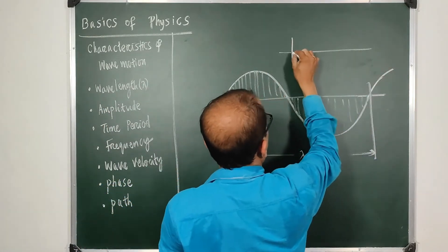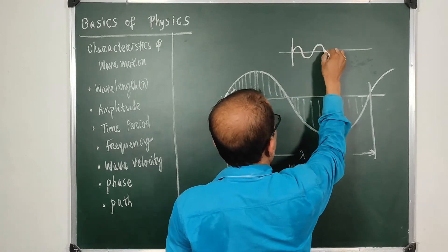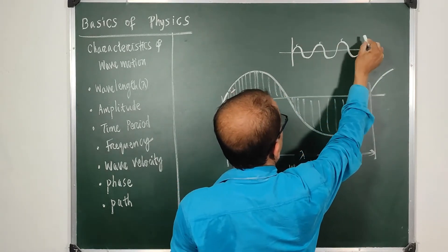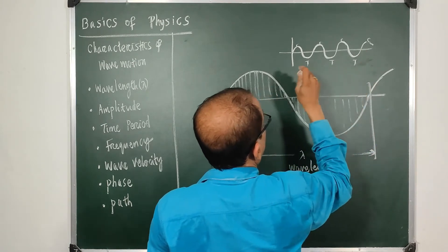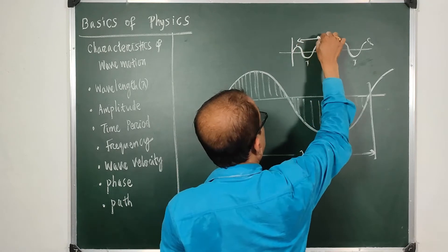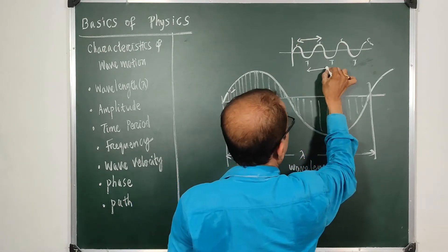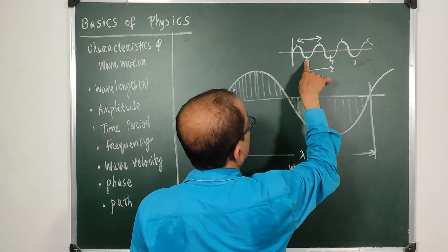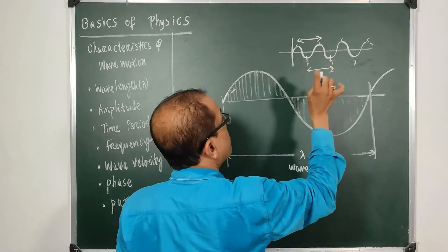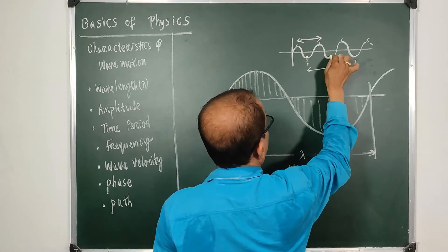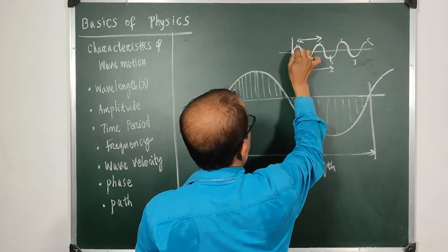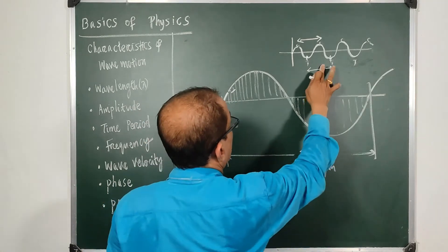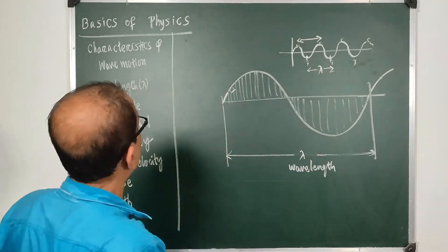Wavelength can be measured between any two consecutive particles vibrating in the same phase. The distance between two consecutive crests is lambda; between two consecutive troughs it is also lambda. So wavelength is the distance between any two consecutive particles in the same phase — whether at crests, troughs, nodes, or antinodes.